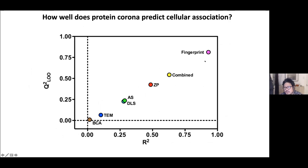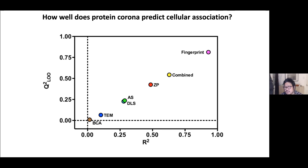We call this the protein corona fingerprint, achieving approximately 0.8 correlation. Comparing other parameters—zeta potential, dynamic light scattering, TEM size measurements, and amount of proteins—the protein corona is actually a better predictor of cellular association than any single variable. The protein corona captures a combination of multifaceted parameters for prediction. Instead of using multiple physical-chemical parameters, it provides a single parameter for determining the relationship between nanoparticle properties and cellular association.